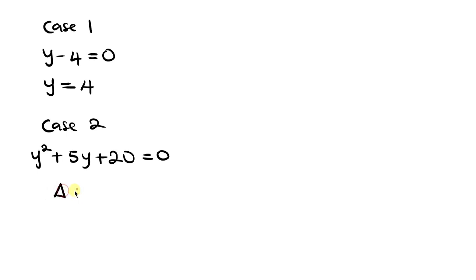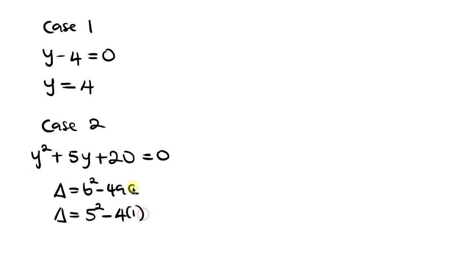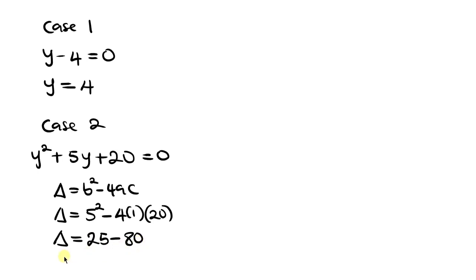The discriminant equals b squared minus 4ac. Here b is 5, a is 1, and c is 20. So discriminant equals 5 squared minus 4 times 1 times 20, which is 25 minus 80, giving a negative value. Since the discriminant is negative, we are not going to use this quadratic equation — we only focus on real solutions.